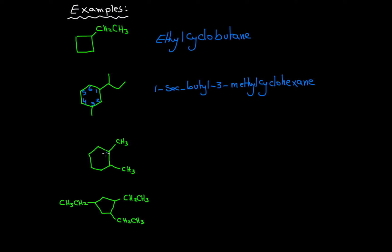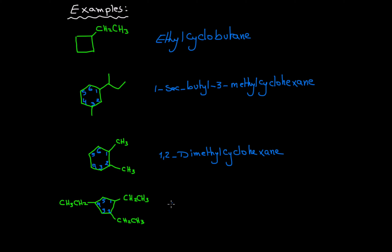...cyclohexane. For the third one, after numbering, the name would be 1,2-dimethyl cyclohexane. And this last one, the numbering would be 1, 2, 3, 4, and 5, so...